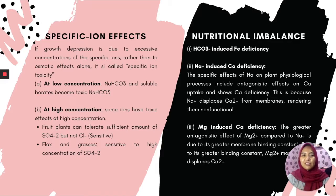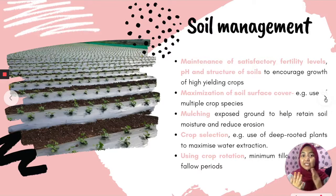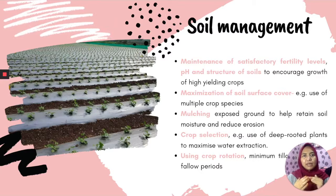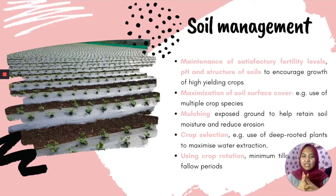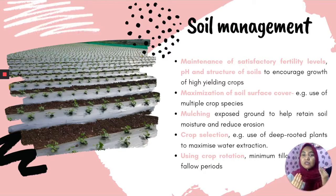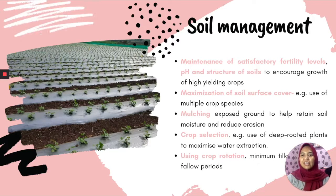For management strategies, in soil management we need to maintain satisfactory fertility levels, pH, and soil structure to encourage growth of high-yielding crops. Another strategy is maximization of soil surface cover — for example, using multiple crop species and mulching.